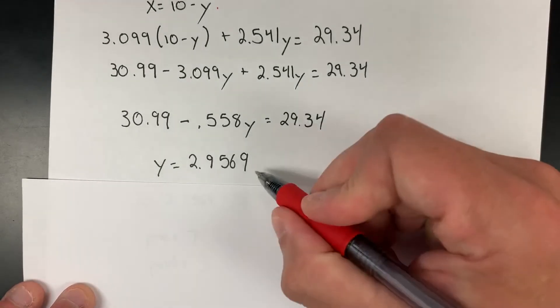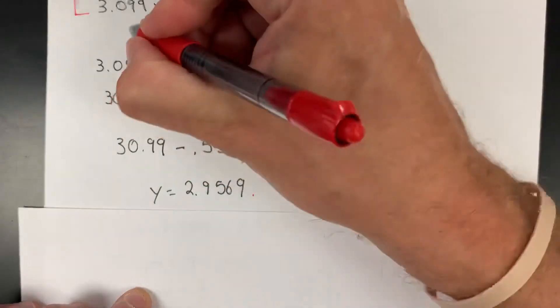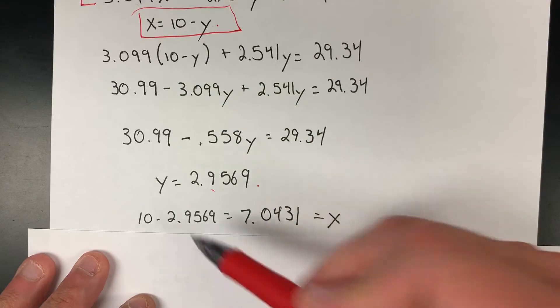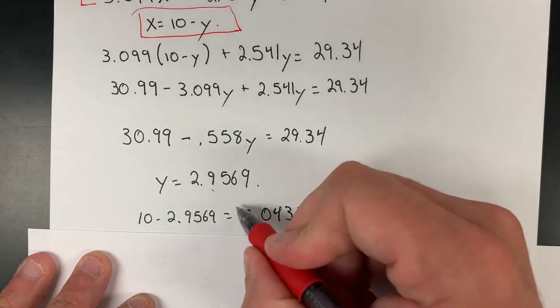Once I have y in hand, recall that I have this equation: x equals 10 minus y. So I subtract that y value from 10 and I get my x value. These are the two values I have in hand.